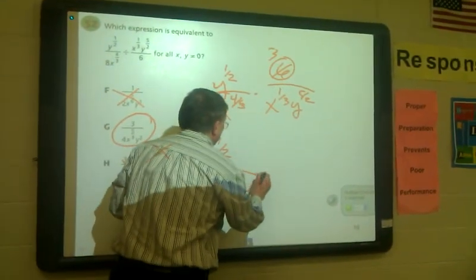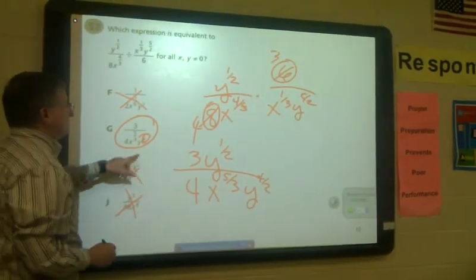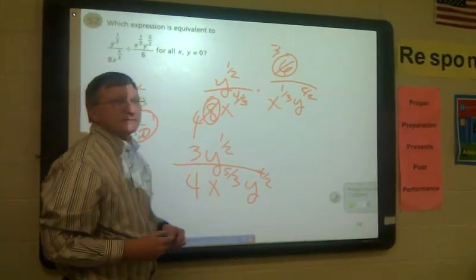And you get what? Four-halves. Which is two. There it is. So it's G. Okay, thanks.